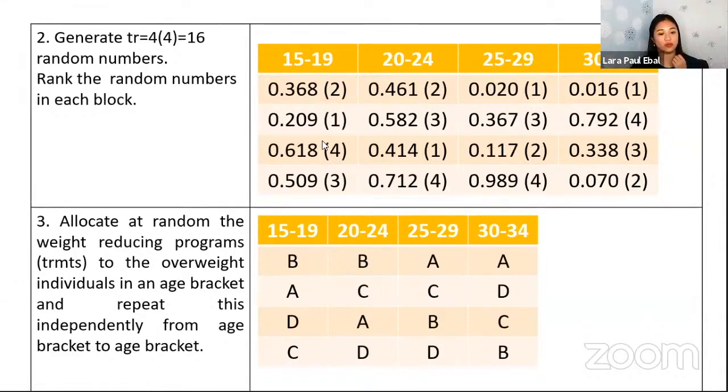And then the next step is to generate random numbers. If we generate these random numbers, take note for block 1, what is the lowest value here? So it's 0.209, that has rank 1. And then the next is 0.368 that has rank 2 and so on. So ganun din. You have to assign ranks again for the next block. Having this smallest generated random number, rank 1, and then the rest. So I hope you understand, you can follow this one.